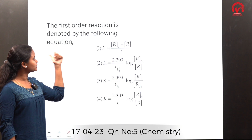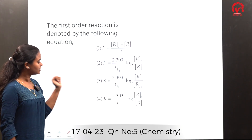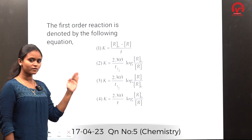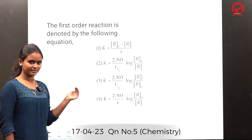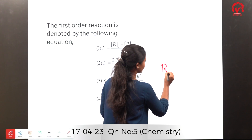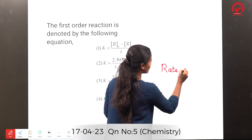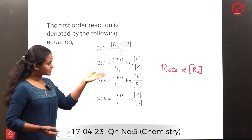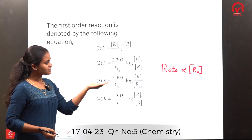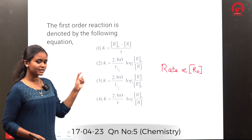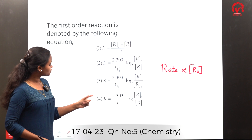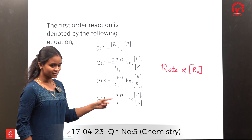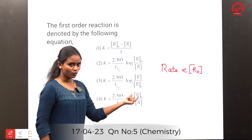The first order reaction: in a first order reaction, the rate constant is directly proportional to the concentration of the reactant. The equation for first order reaction rate constant is k = (2.303/t) × log([A]₀/[A]), where t is time, [A]₀ is the initial concentration and [A] is the final concentration of the reactant.